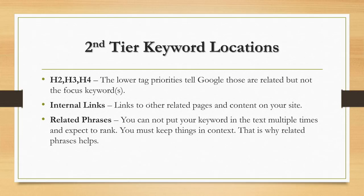You can't put your keyword in the text multiple times and expect to rank. Google considers that keyword stuffing, and if your keyword ratio is too high — meaning too high a percentage of your total text is your keyword — Google thinks you're just trying to rank rather than providing valuable content. It's okay to use related phrases, and it may even help your overall search results to explain things in different ways that relate to the person's actual search query.